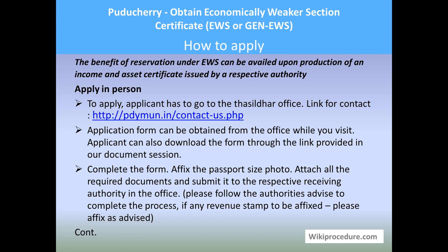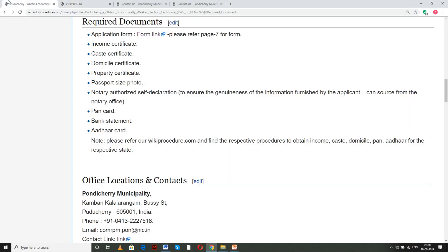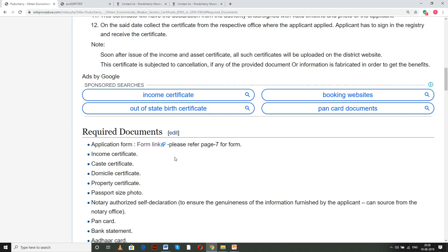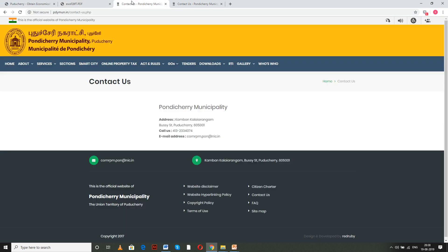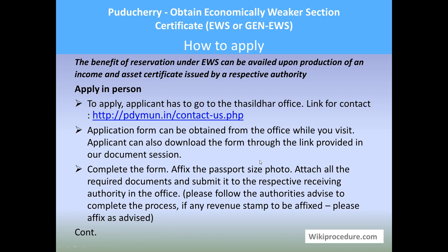Let us see how to apply. The benefit of reservation under EWS can be availed upon production of an income and asset certificate issued by the respective authority. To apply in person, one has to go to the Tasildar office concerned for their area. Don't worry if you don't know the Tasildar office address — in our wikiprocedure page under 'Apply in Person' we have a link to the address details. Go to the office according to the contact information.